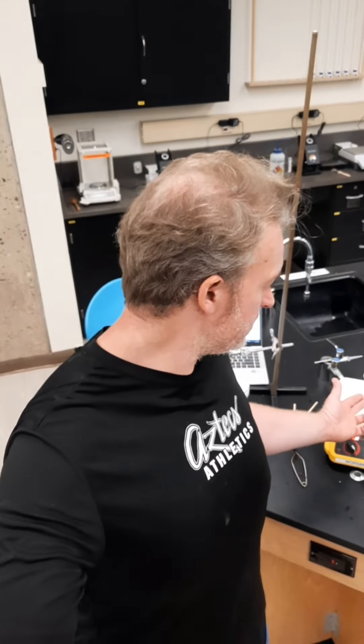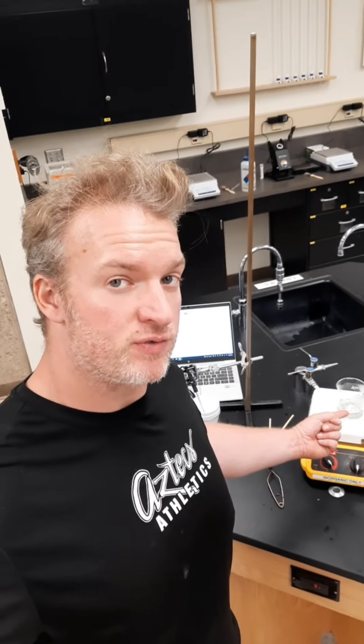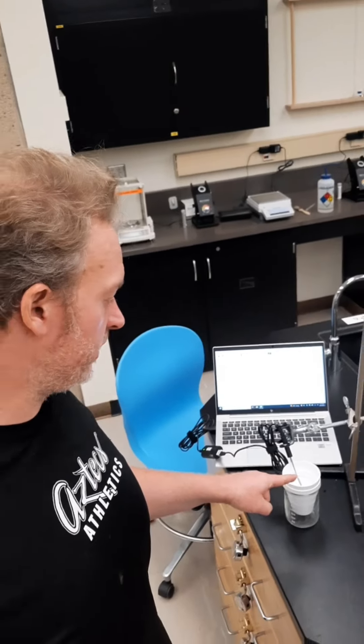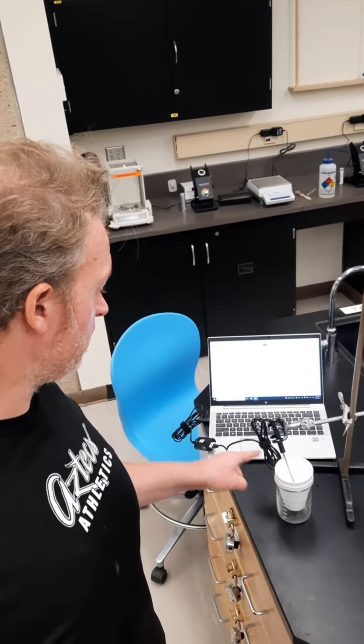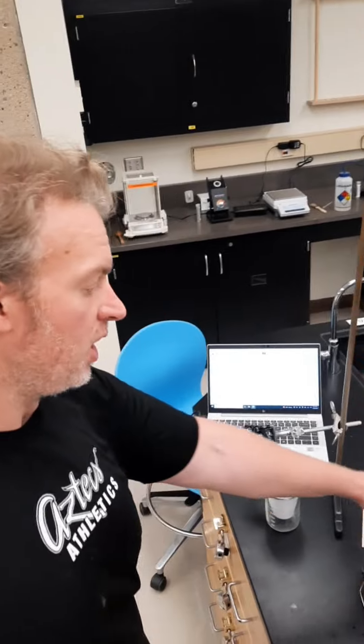Hello you absolute legends. This is to help you with the calorimetry lab, the second part where we experimentally determine the specific heat of a metal. Our metal is this hose fitting that is in boiling water. So we know the hose fitting is starting off at 100 degrees Celsius. We're going to put the hose fitting in this water and this water is currently at 22.9 degrees Celsius. We expect this water to increase in temperature when we put in the hot piece of metal.